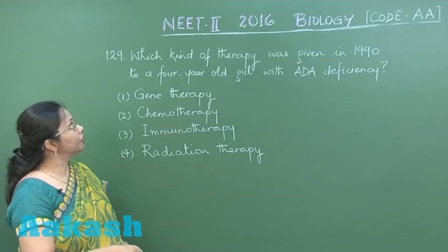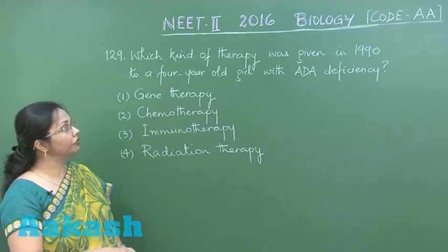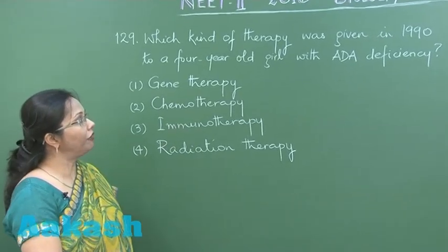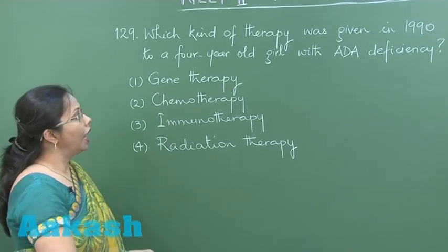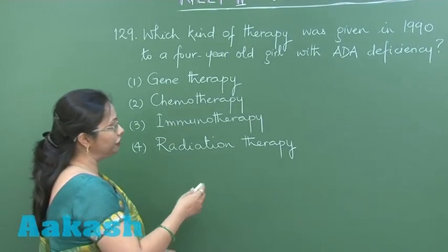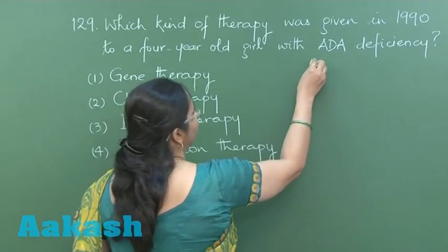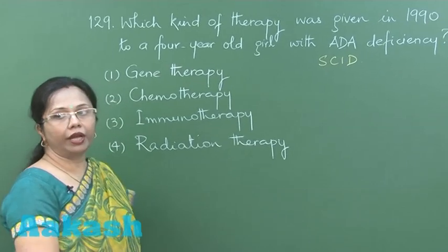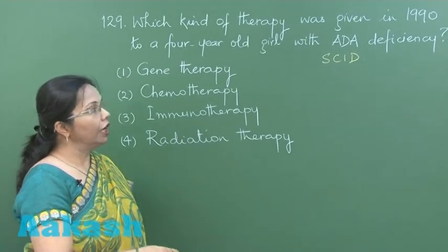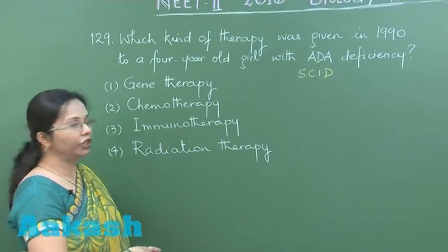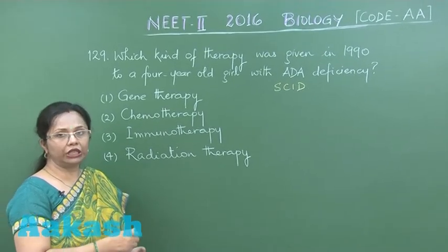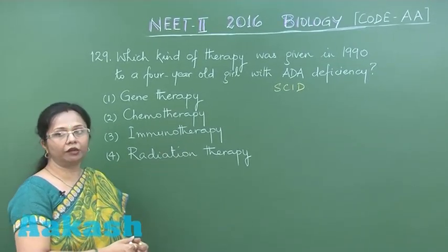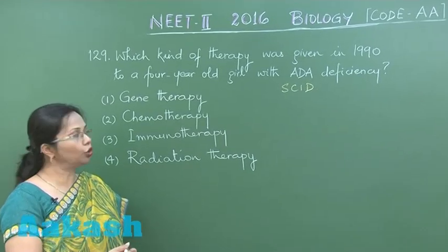In this question, what kind of therapy was given in 1990 to a four-year-old girl having ADA deficiency? ADA deficiency is a condition associated with SCID — severe combined immunodeficiency — which is a rare genetic disorder due to deletion in chromosome number 20, where the enzyme adenosine deaminase is not formed.